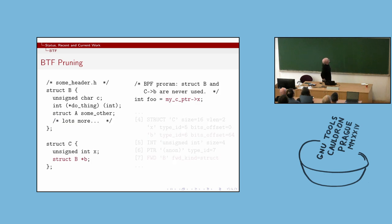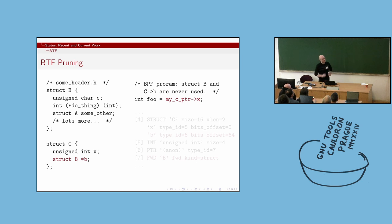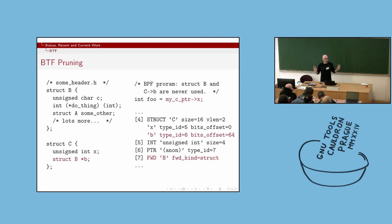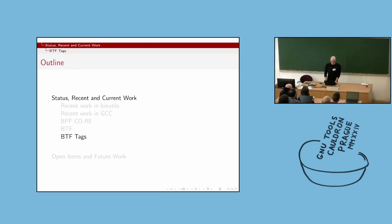What gprune-btf looks like in practice: if your BPF program only reads c->x through a pointer, and struct c contains a pointer to struct b which is a massive common kernel data structure that you never actually use, instead of generating full BTF for struct b, we just replace it with a forward declaration. The idea is: starting from what you actually use, keep only what you need and get rid of everything else.